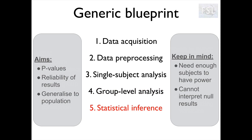Finally, we do our statistical inference. This is the step that gives us our p-values or, in case of images, our p-corrected maps. At this stage, we are testing whether our results are reliable and whether they are generalizable to the population. We need to keep in mind that we need enough subjects to have enough power and that we cannot interpret null results. So if our results are not significant, it means that we cannot reject the null hypothesis, but we have not proved it. We can say that the brain measure is not statistically different between two groups, but we have not proven that it's the same.